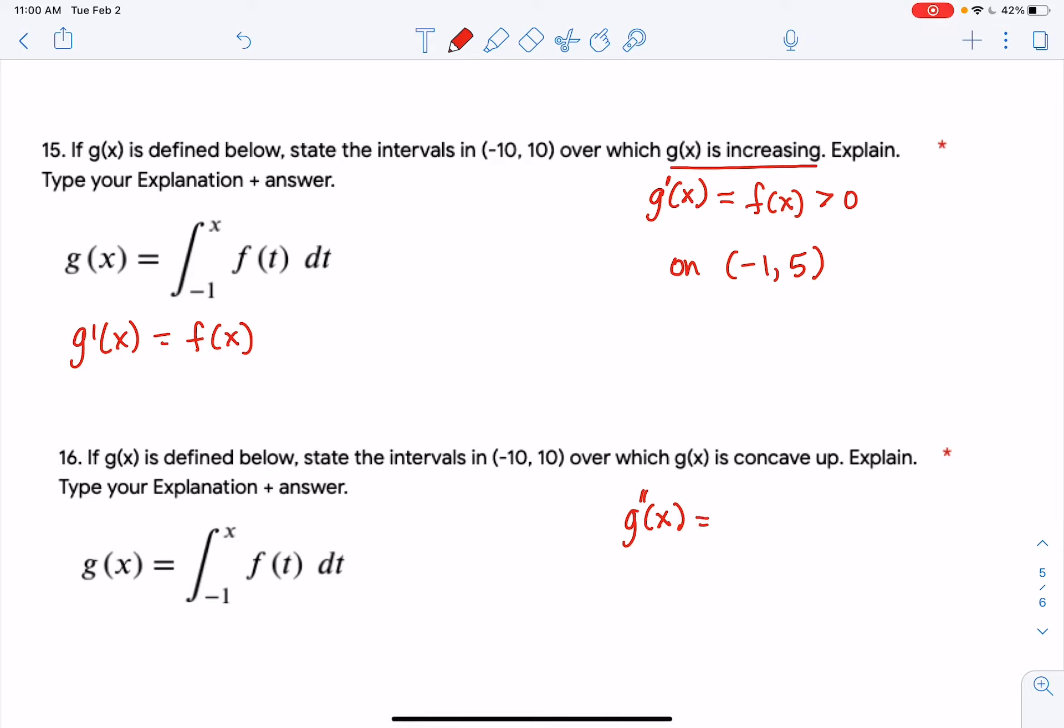which we can see just by taking the derivative of that step, g double prime of x is f prime of x. And concave up means that the second derivative should be greater than 0. So in this case we need f prime to be greater than 0. If f prime is greater than 0, that means that f of x is increasing. So we just need to look where f is increasing.